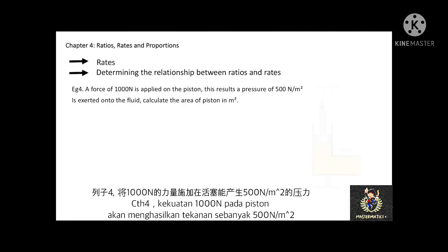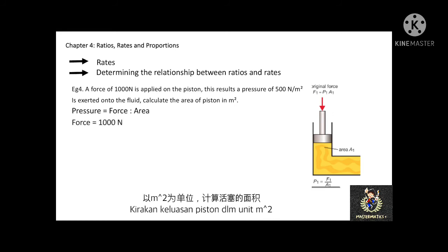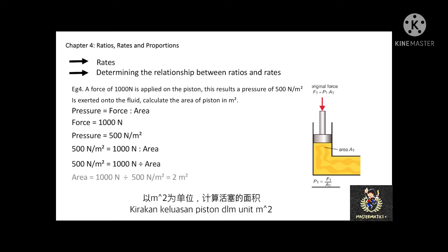Example 4 is about pressure. A force of 1000 newtons is applied onto a piston, resulting in a pressure of 500 newtons per square meter exerted onto the fluid. Calculate the area of the piston in square meters. The ratio of pressure is force to area. Given force is 1000 N and pressure is 500 N/m², we get 500 = 1000 divided by area. Therefore, the area equals 2 square meters.